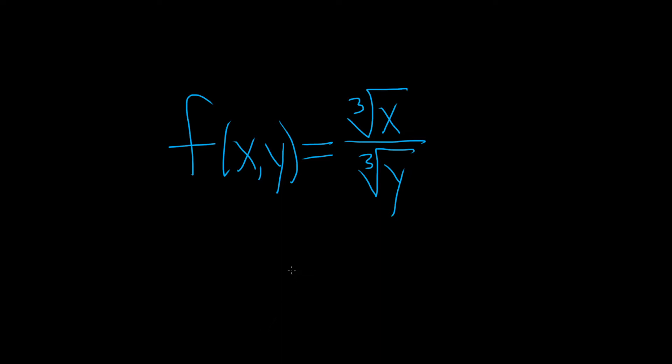Hi, everyone. In this problem, we have to find the domain of this function. The domain of this function is the set of all ordered pairs that we can plug into this function that makes sense. So we just have to think about when will this not make sense.